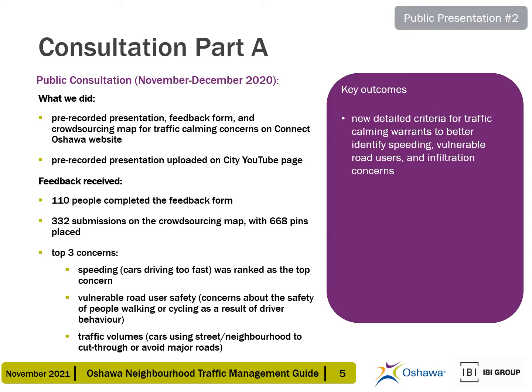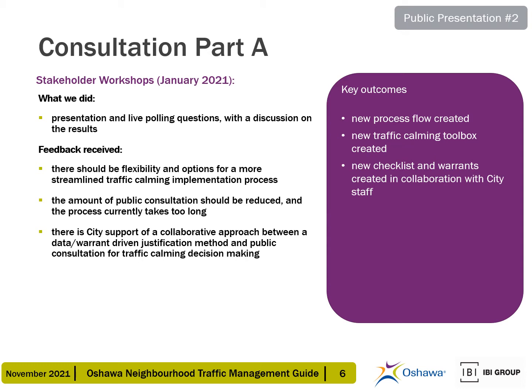The feedback was addressed in the updated draft Neighborhood Traffic Management Guide with new detailed criteria for related traffic calming warrants. During the stakeholder workshop phase, a presentation with live polling questions was prepared and a discussion was had on the results. Feedback included: there should be flexibility and options for a more streamlined traffic calming implementation process; the amount of public consultation should be reduced as the process currently takes too long; and the revised process should strike a balance between a data and warrant-driven justification method and public support for traffic calming decision making. This feedback was addressed with a new process flow, traffic calming toolbox, checklists, and warrants created in collaboration with city staff.